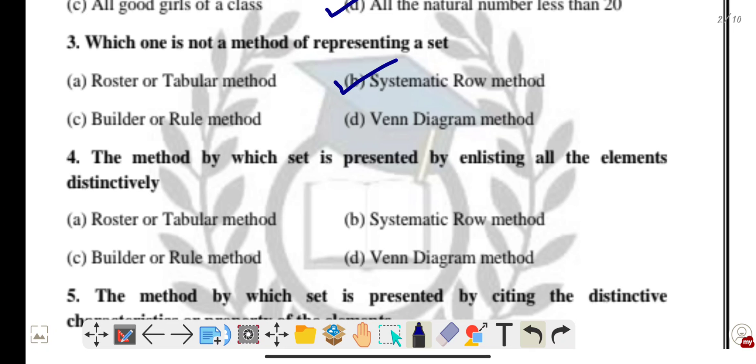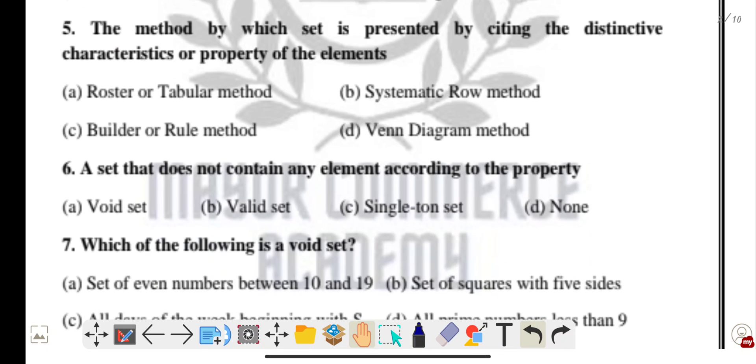Question four: the method by which a set is presented by enlisting all the elements distinctly — that is called the roster or tabular method.